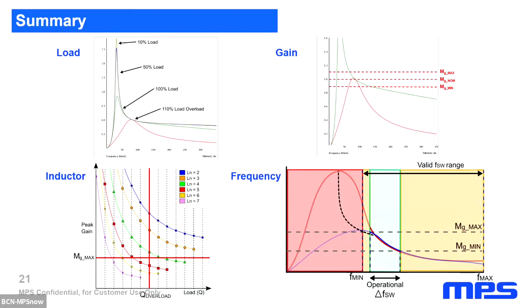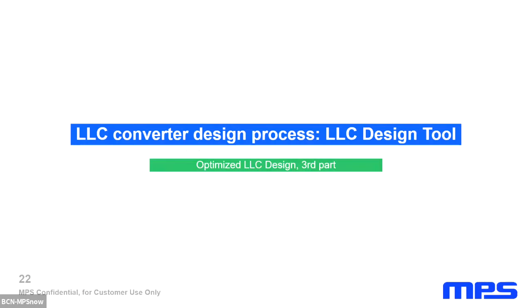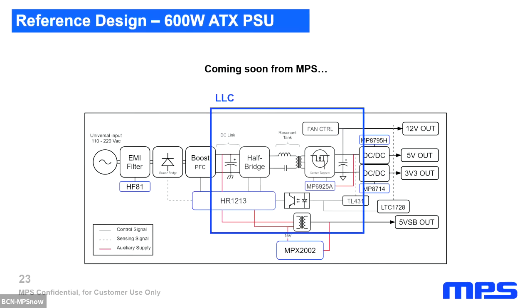Thank you, Tommy. To make the design process easier, MPS has developed a web-based tool that integrates all the calculations we have posted previously. This is very useful because it allows the user to observe how modifying different parameters affect the design course. To better show you how the design tool works, we are going to use one of our reference designs, a 600 watts ATX power supply which has three different output voltage levels: 12, 5, and 3.3.